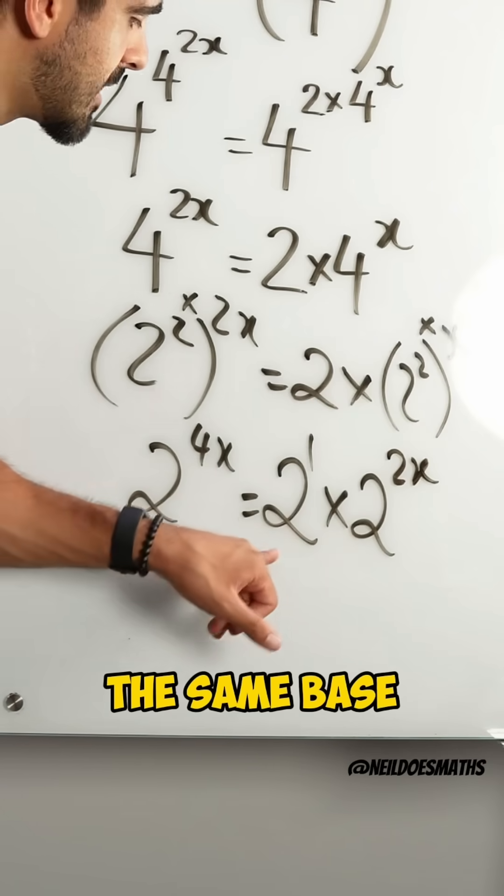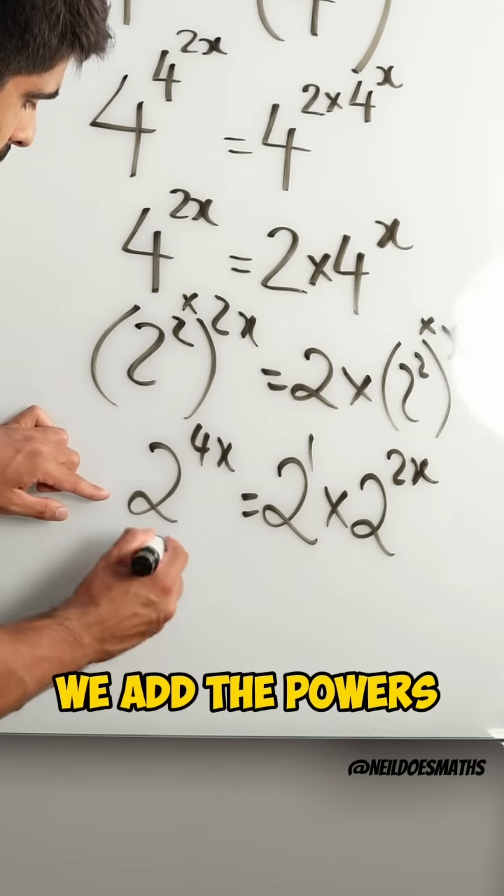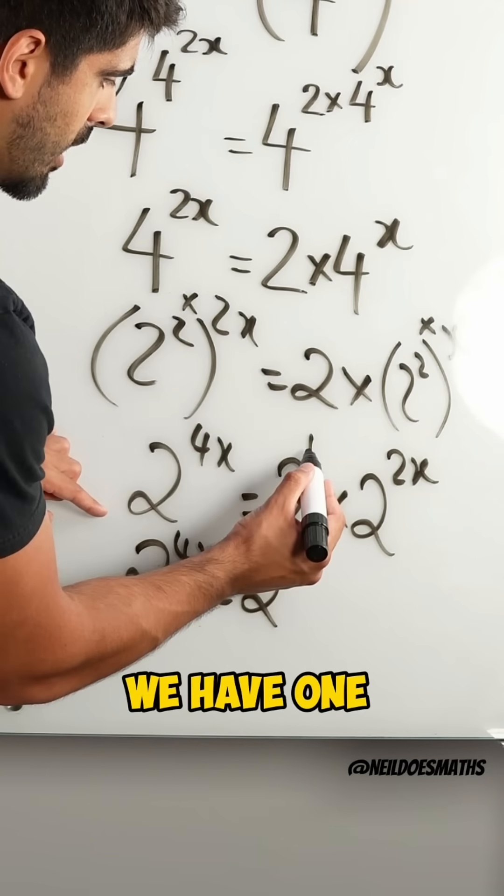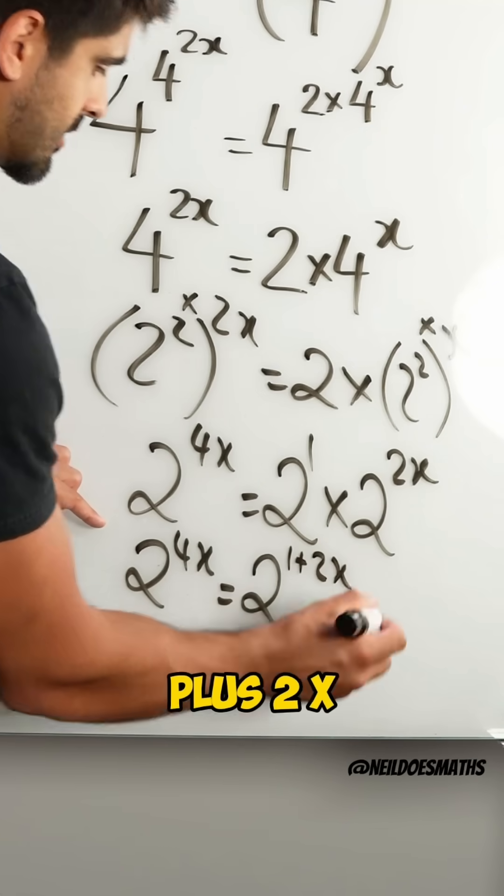Okay, finally, when we multiply two numbers with the same base, we add the powers. So we have 2 to the power of 4x is 2. We have 1 adding the powers plus 2x.